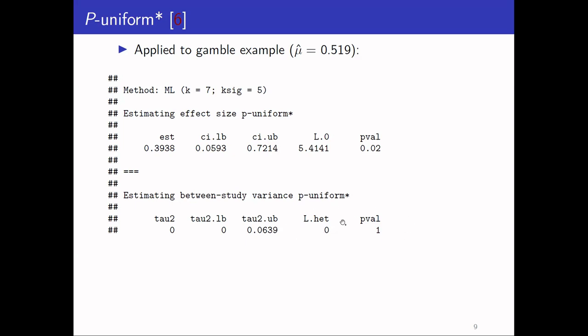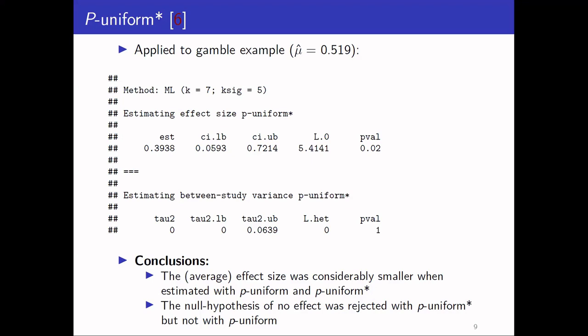To conclude from this example: the average effect size was considerably smaller when using PUNIFORM and PUNIFORM star — correcting for publication bias — but the null hypothesis of no effect was rejected with PUNIFORM star, though not with the PUNIFORM method. So there seems to be evidence of publication bias, with quite a bit lower effect sizes.